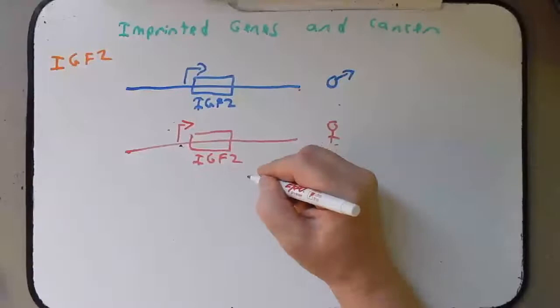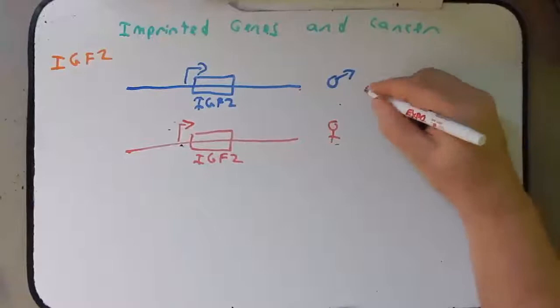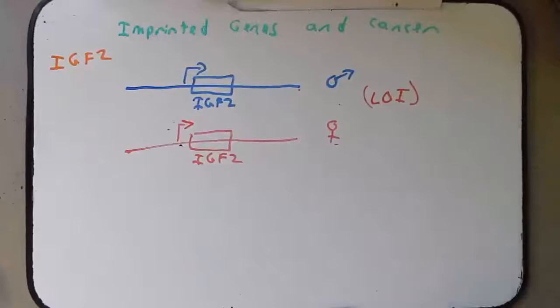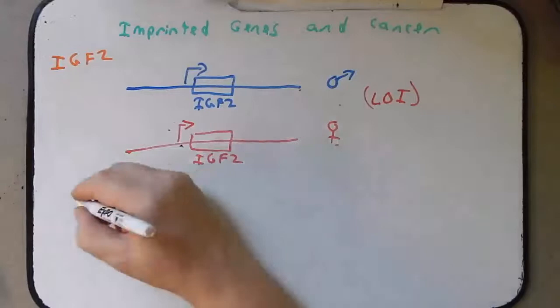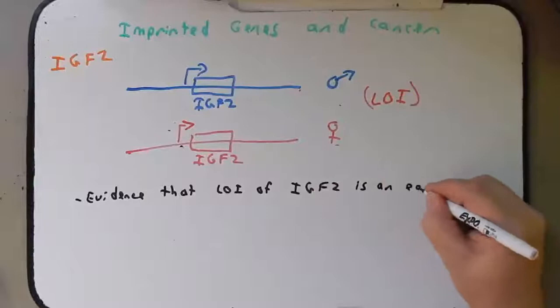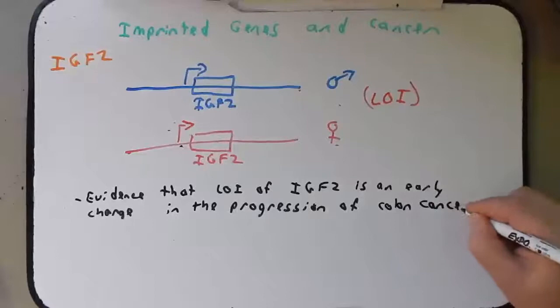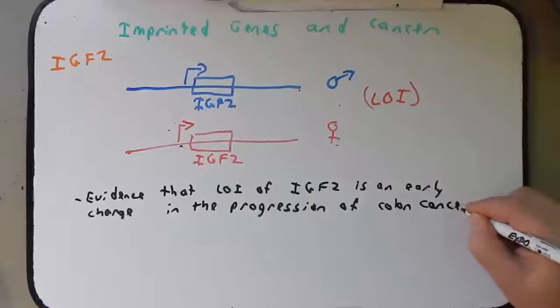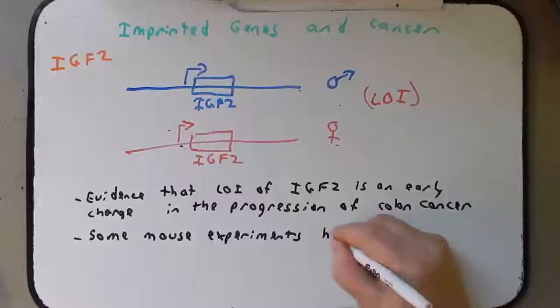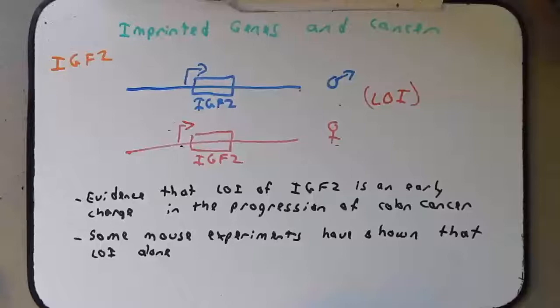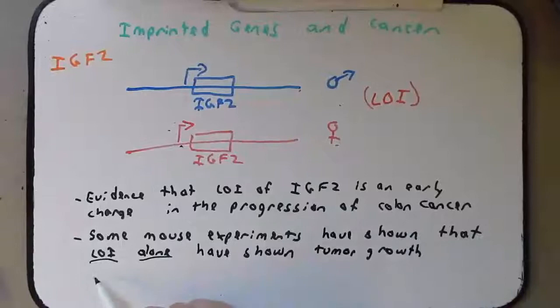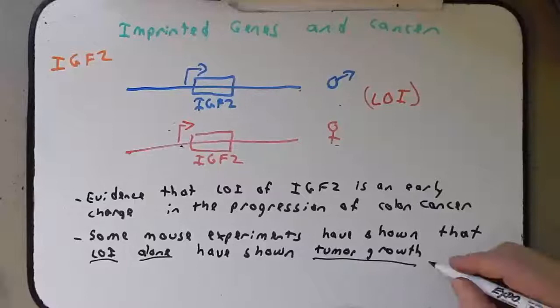So now we have two copies of the gene expressed due to this loss of imprinting (LOI). Remember that these genes are important in controlling size, and there is evidence to suggest that loss of imprinting of IGF2 is an early change in the progression of colon cancer. Some mouse experiments have shown that loss of imprinting alone — with no other mutations in tumor suppressor genes or proto-oncogenes — has shown tumor growth. As the tumor grows fast and gets bigger that may lead to other mutations and epigenetic changes that lead to metastasis.